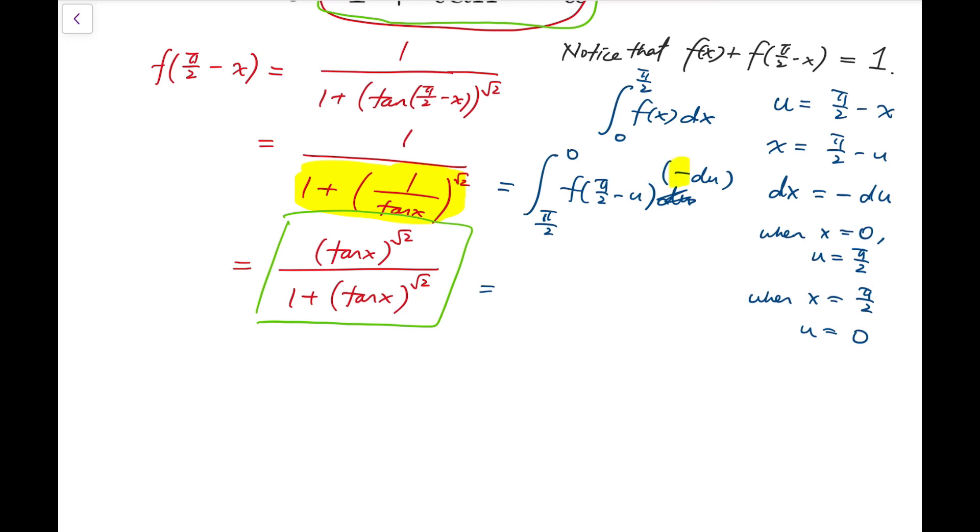Now I'm going to make use of this minus sign to reverse the limits so it makes more sense. Integrating from u equals 0 to pi over 2 on the function f of pi over 2 minus u du.